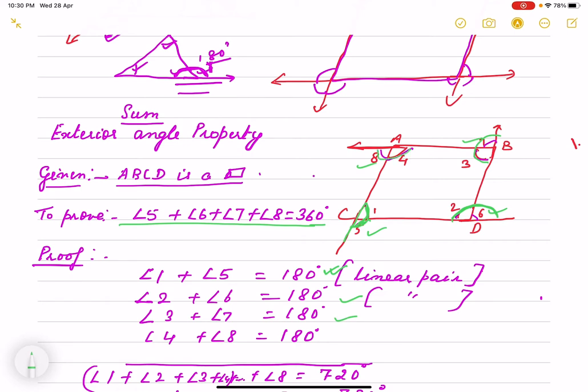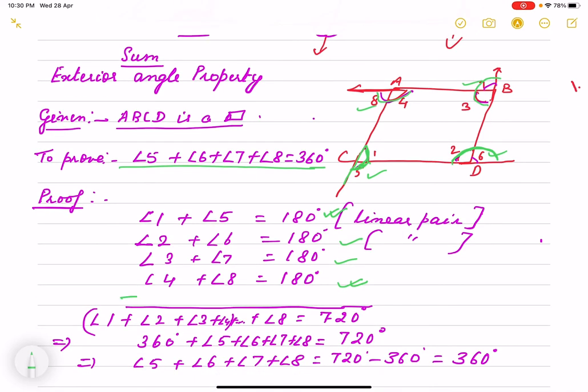If we add all these LHS also and RHS, I get that from angle 1 till angle 8 is 720 degree. And if you put angle 1 plus 2 plus 3 plus 4, we know that it is 360 degree. So when we find out angle 5 plus 6 plus 7 plus 8, that is 720 minus 360, that is 360 again.